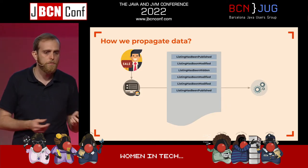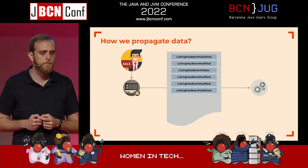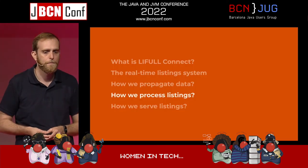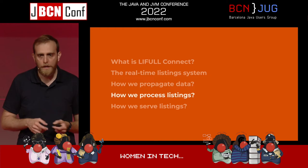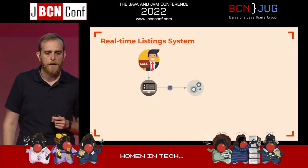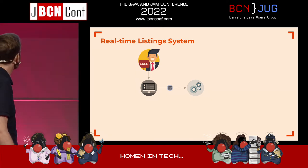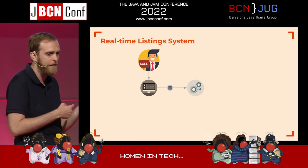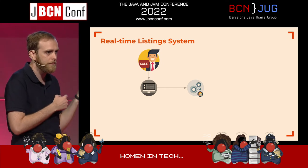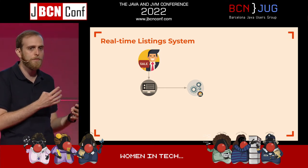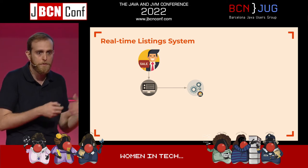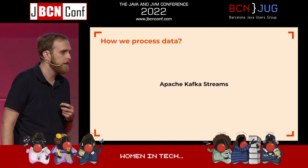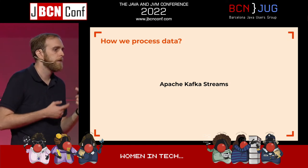That's how we propagate the data on this event log to the real-time listing system. Next, how we process these listings. As you see, what we have are not listings — they are domain events about listings. But what we want to serve are listings. So we somehow need to reconstruct the information to provide them to the portals. How do we do these transformations? With Apache Kafka Streams.